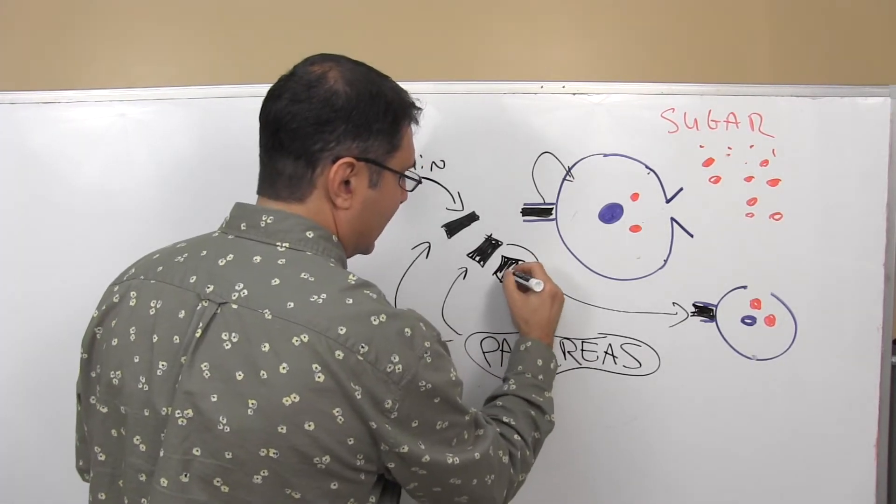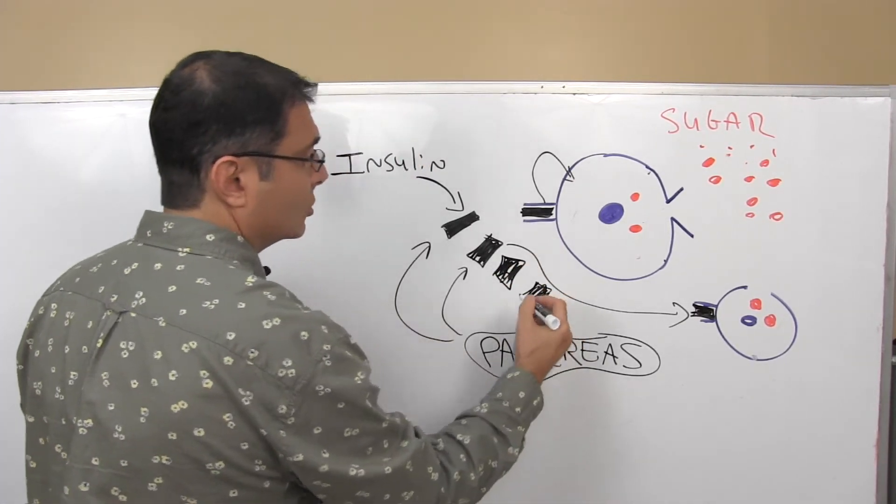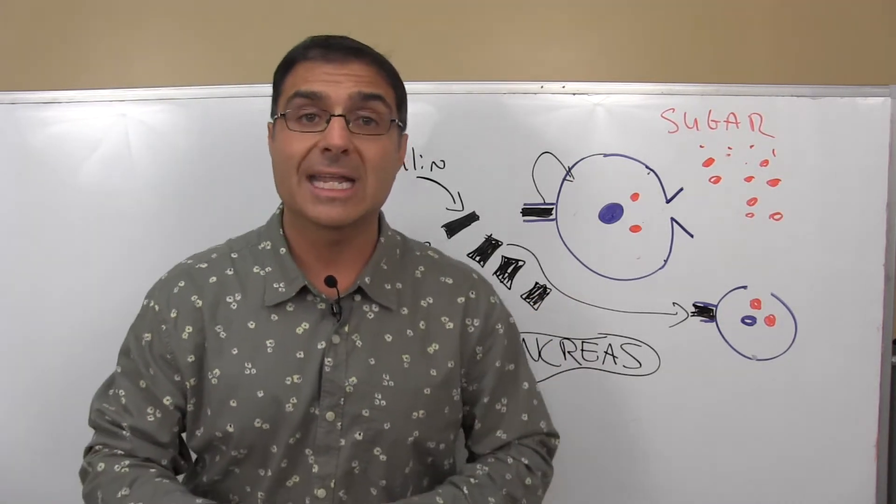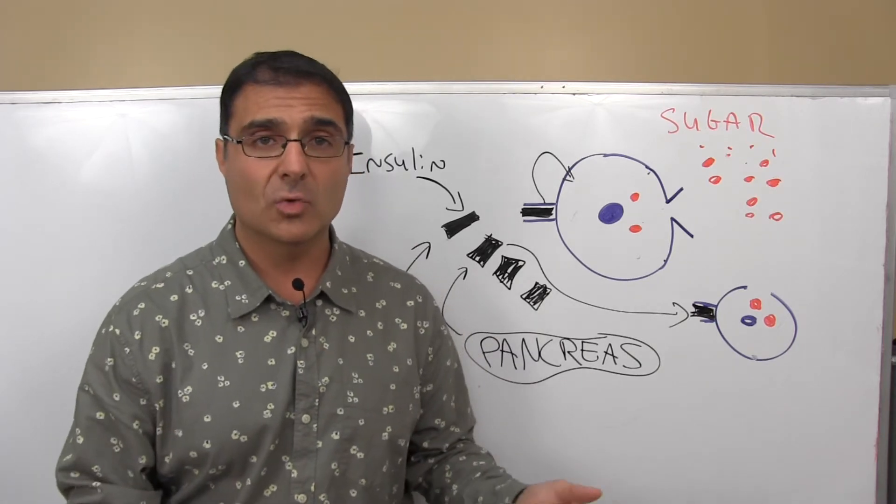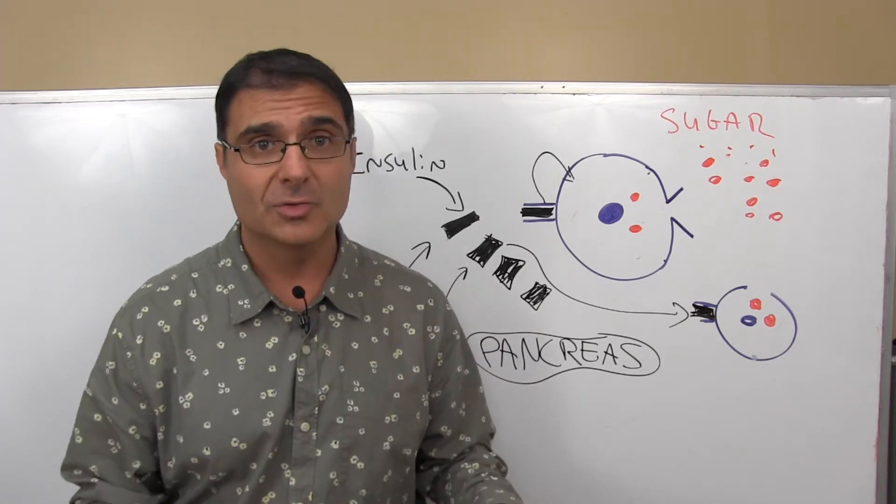So we get all this insulin floating around the body, which is horrible because insulin, too much of it is inflammatory to the body. It increases inflammation. Insulin is the most powerful fat-storing hormone. In the presence of too much insulin, you're not going to lose weight, period.